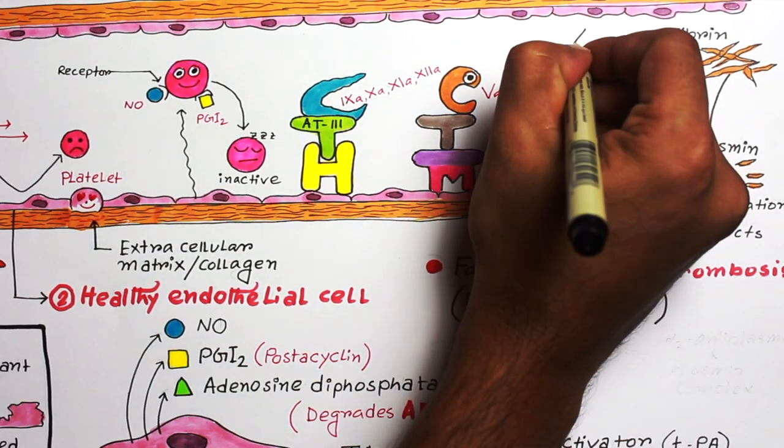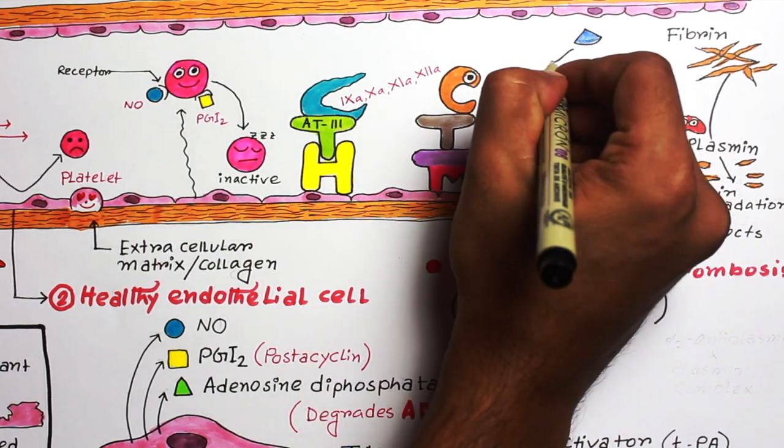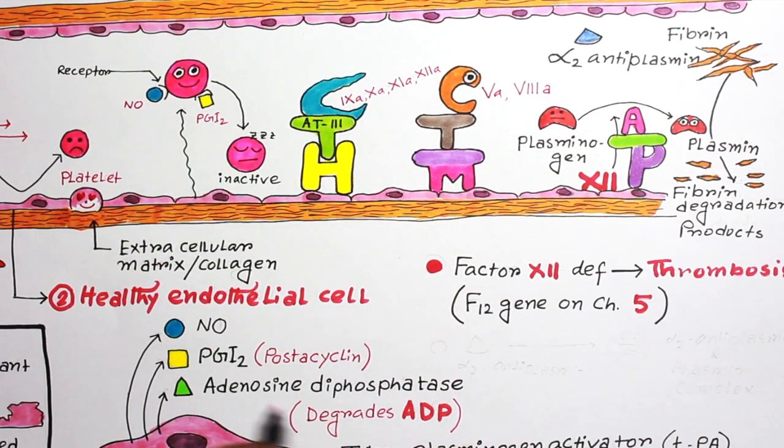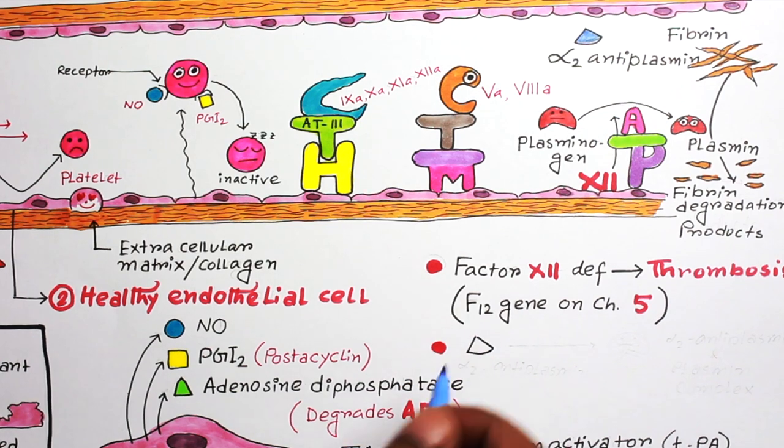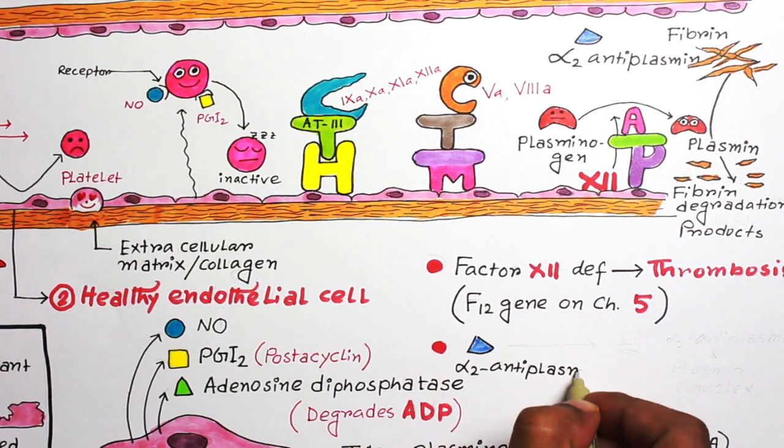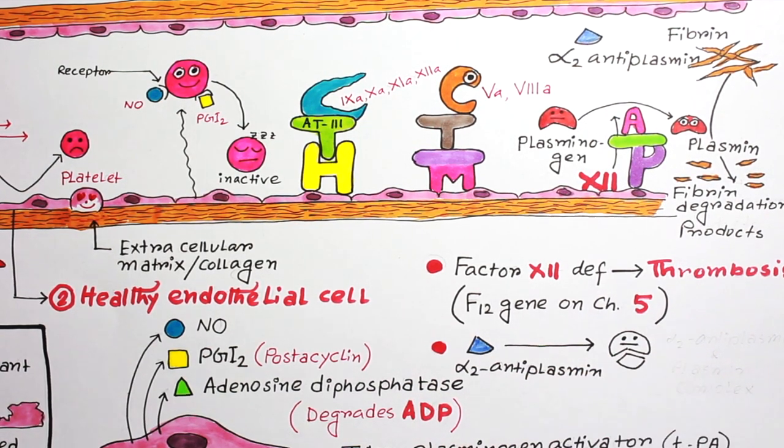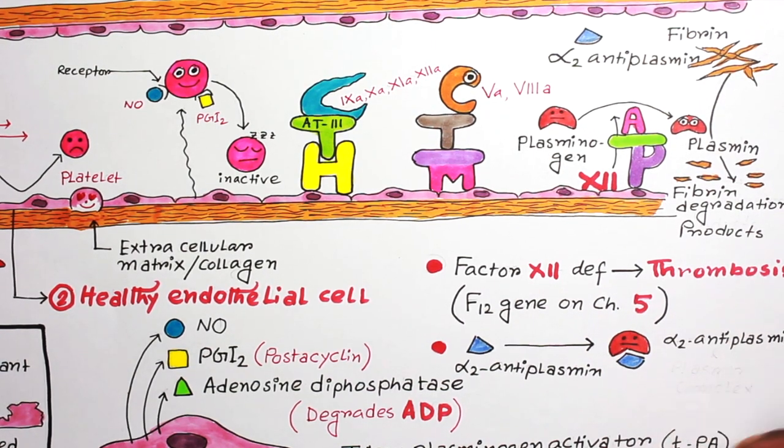Another point I would like to mention: once activated, plasmin in turn is tightly controlled by counter-regulatory factors such as alpha 2 antiplasmin, a plasma protein that binds and rapidly inhibits free plasmin.